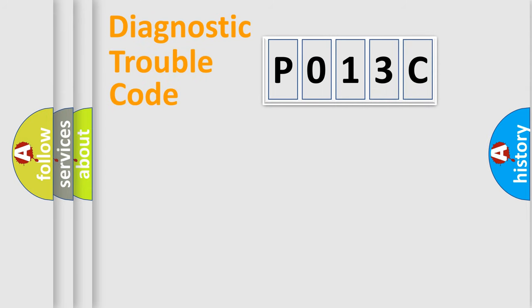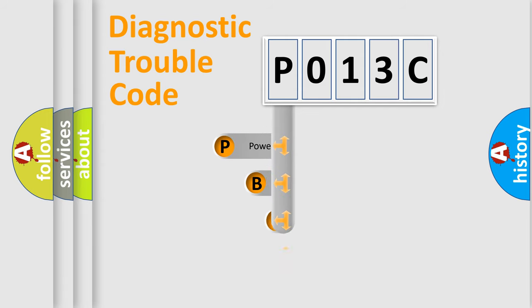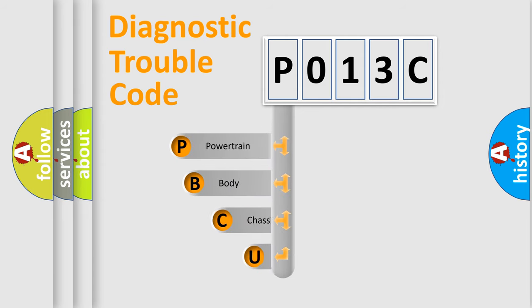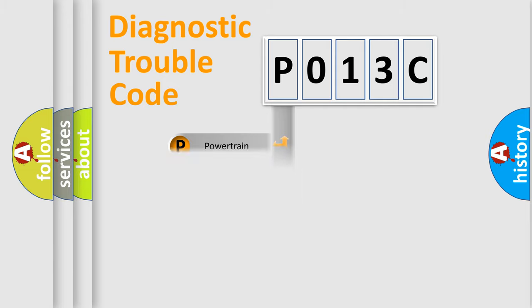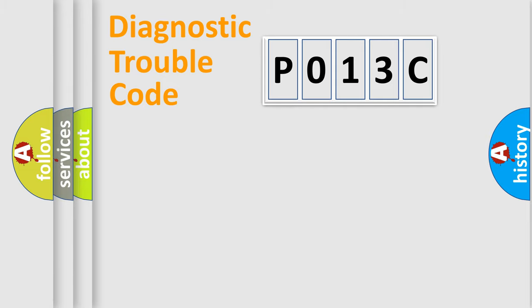Let's do this. First, let's look at the history of diagnostic fault code composition according to the OBD2 protocol, which is unified for all automakers since 2000. We divide the electric system of an automobile into four basic units: Powertrain, Body, Chassis, and Network.